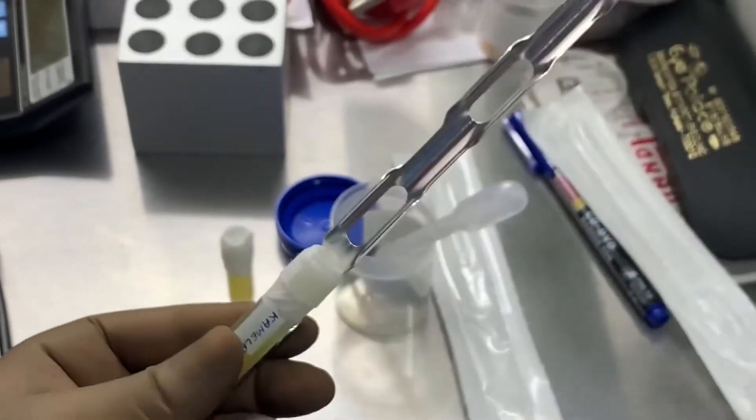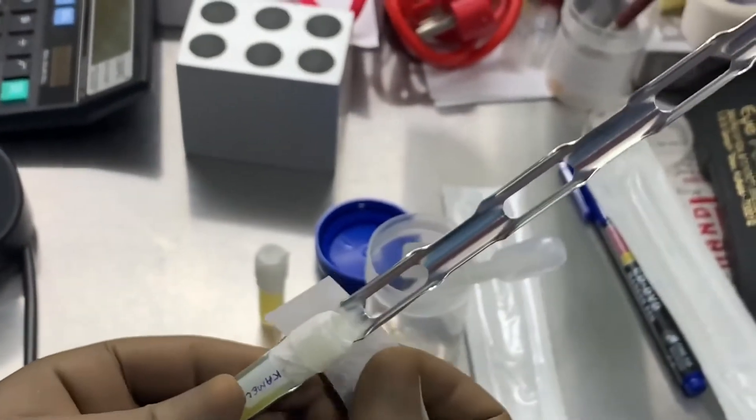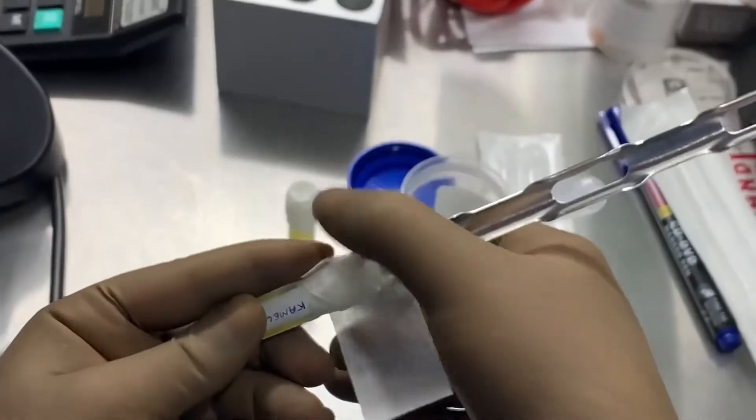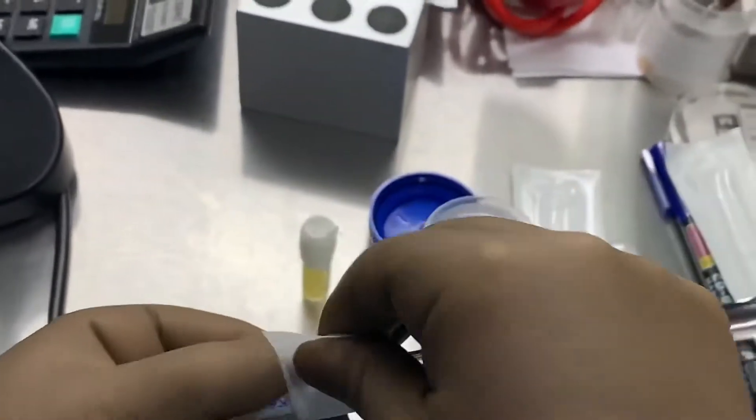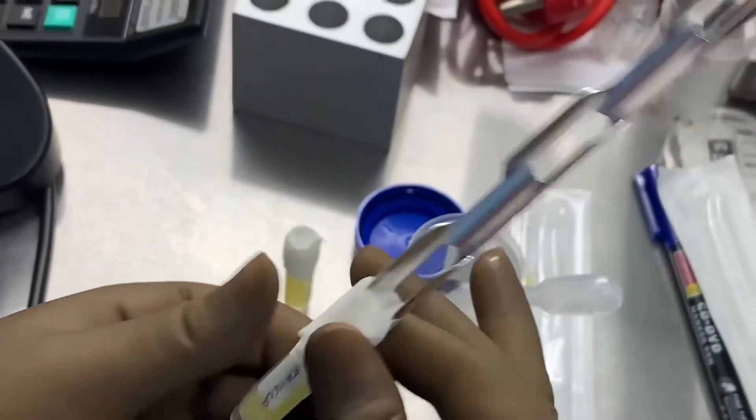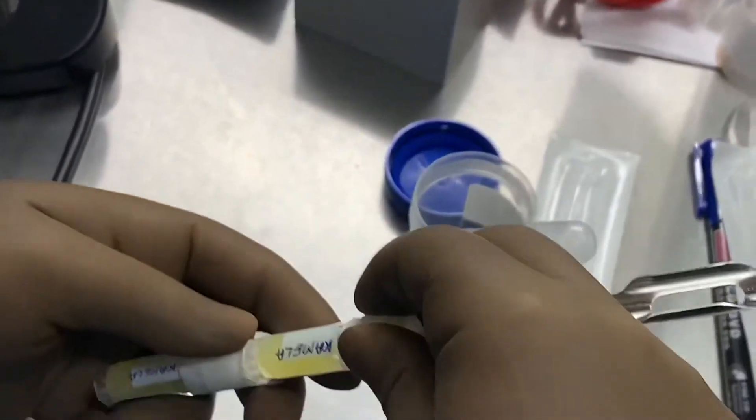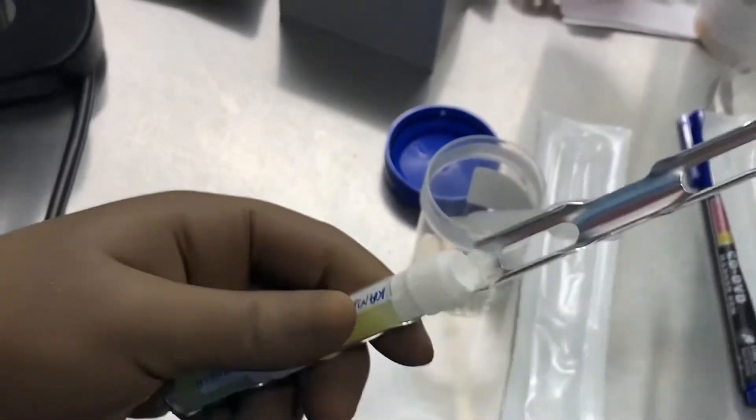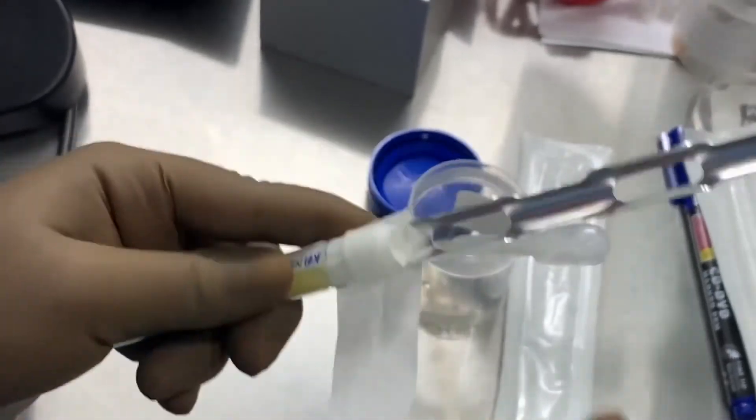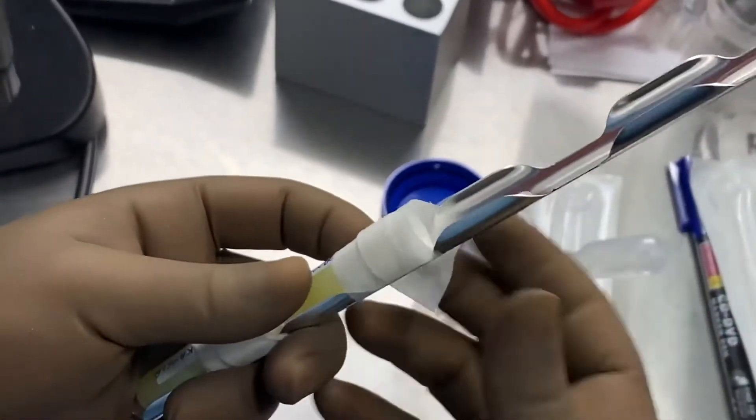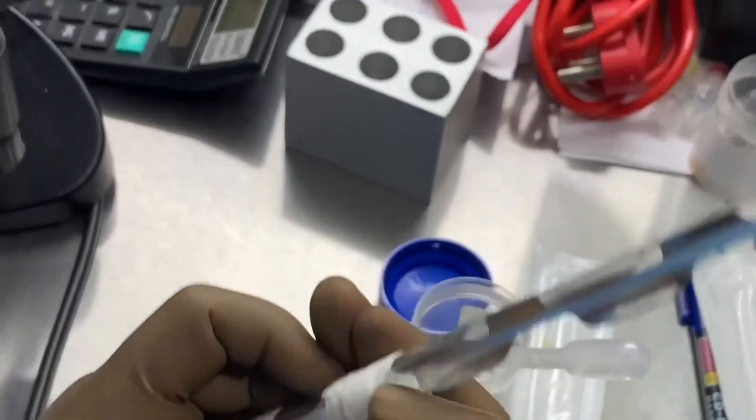So now these cryovials are kept inside the canister. This particular ammonium canister we use for keeping the cryovials inside the liquid nitrogen. So here we are keeping that thing inside the canister. Then it would be plunged into the liquid nitrogen vapor for at least half an hour.